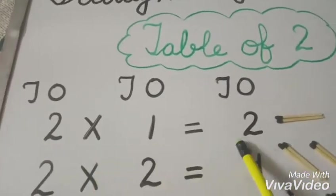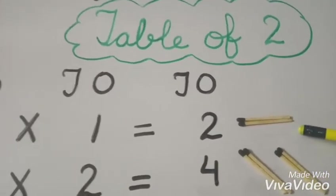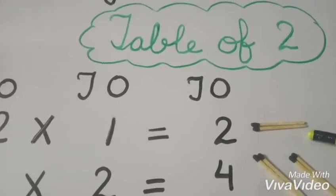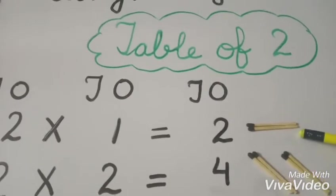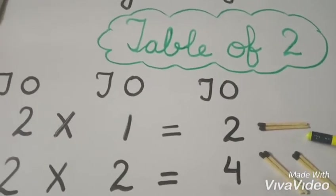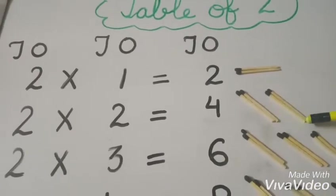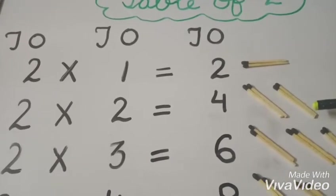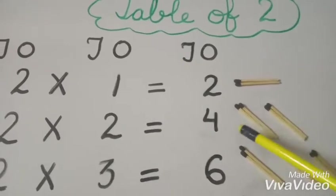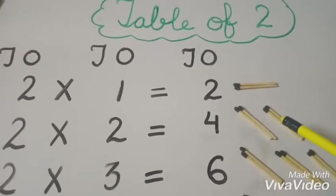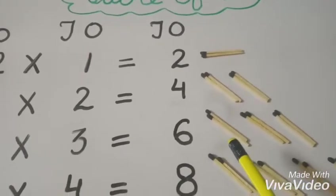Two ones are two — when you take two sticks one time, it becomes two. One's a two. And when you take two sticks two times, then you will get one, two, three, four — so two two's a four.